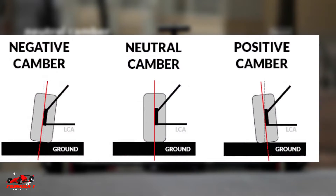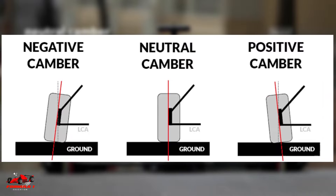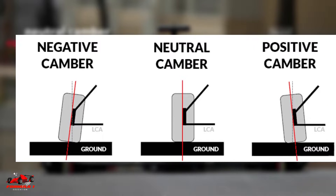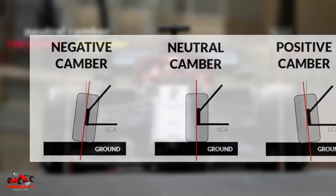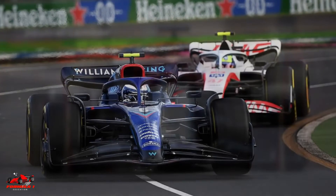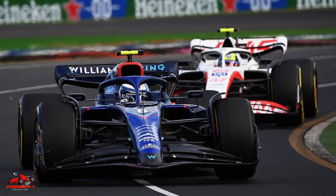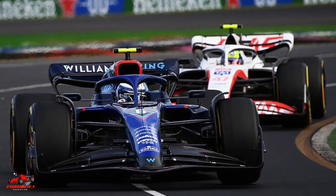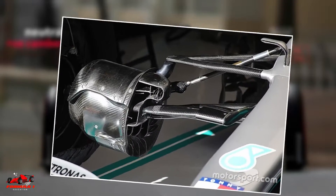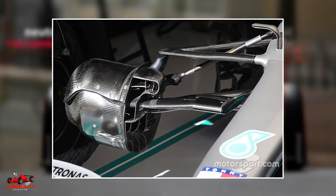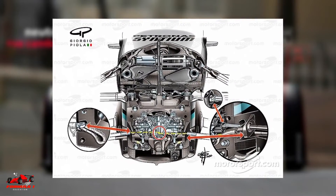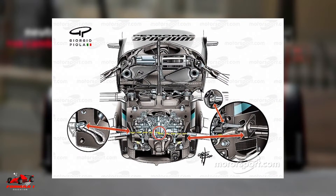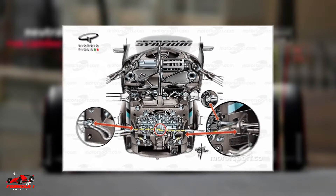Since camber settings cannot be adjusted while driving, the optimal camber angle takes into account all the corners in the track. In 2020, Mercedes introduced the DAS system, which allowed drivers to adjust the toe angle of the car while driving.